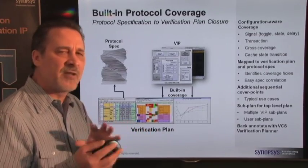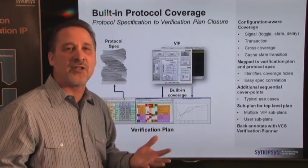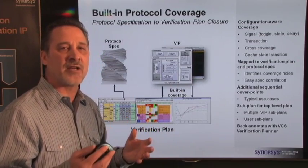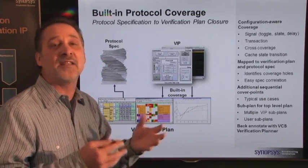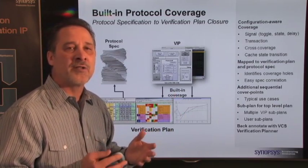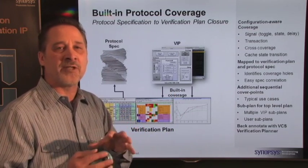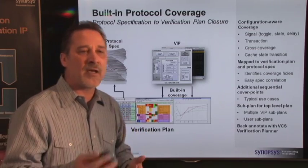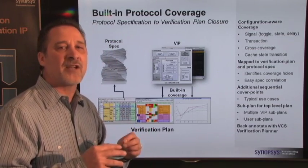Our VIP provides several different types of coverage. We provide toggle coverage, state coverage, and transaction coverage. You probably also have cross coverage, crossing various transactions or maybe transactions with error conditions. In the case of a protocol like ACE, you probably have cache state coverage that also applies. The base functional coverage for the VIP is implemented to include all that particular functional coverage for your protocol. Once you have that coverage and you've run your stimulus, you need some way to map it back to the protocol specification.